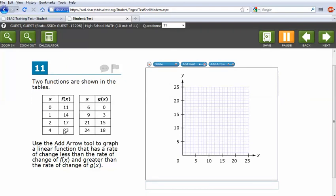Two functions are shown, so we have two functions, two tables, f and g. Use the add arrow tool to graph a linear function that has a rate of change less than the rate of change of f of x and greater than the rate of change of g of x. So they're going to have to be able to calculate slope, graph it, and then put a line on here. Less slope than this, more slope than that.